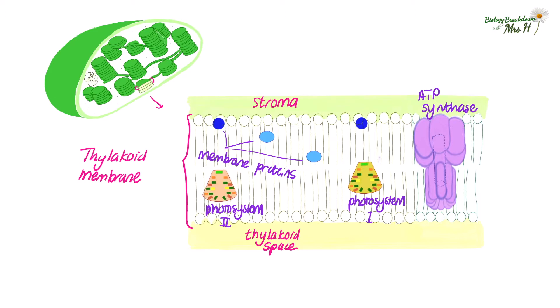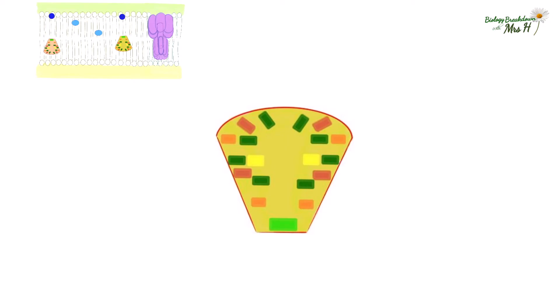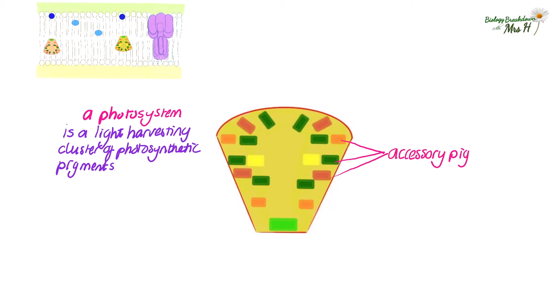Just before we get started we'll have a quick look at one of these photosystems. A photosystem consists of a cluster of light harvesting pigments, the accessory pigments and a primary pigment reaction centre which is actually a chlorophyll A molecule. There are two types of chlorophyll A that have slightly different peak absorbency of light.